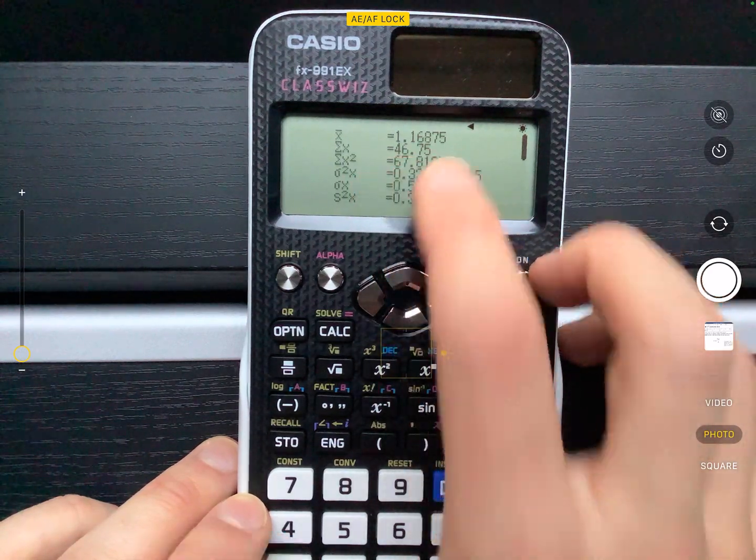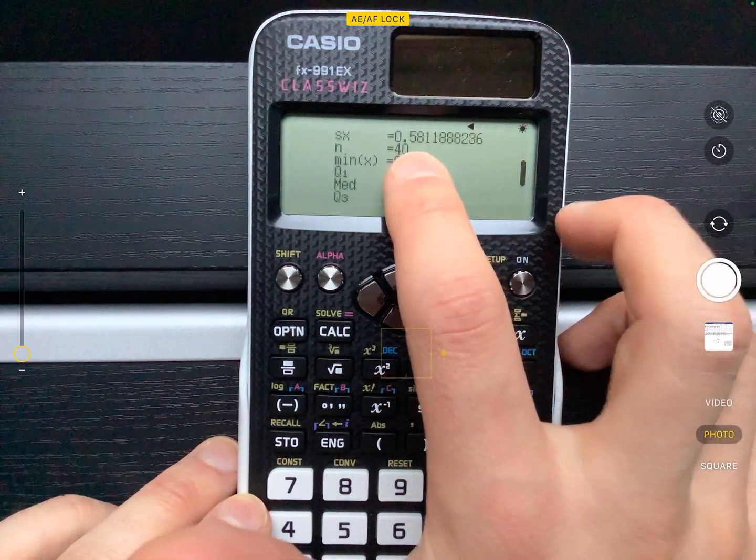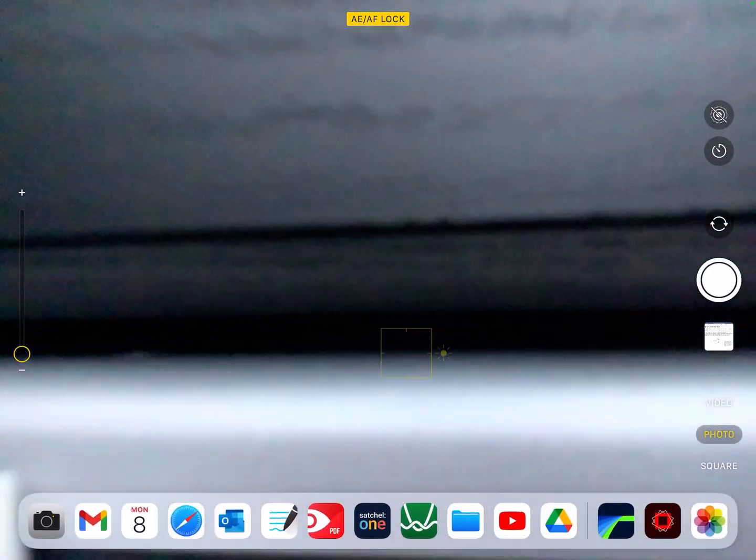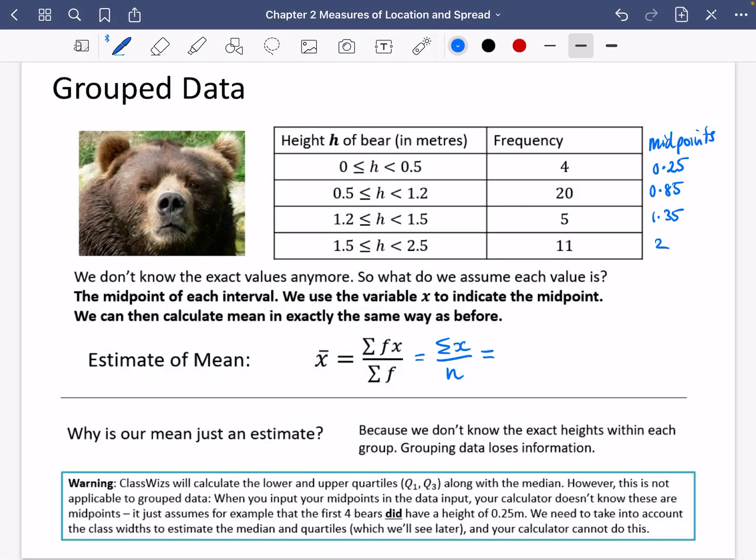I'm going to do the sum of X, which is 46.75 divided by 40. That's what I'm going to write just to make sure I get those method marks. So I'm just going to come back to GoodNotes. So from the calculator, the sum of X is 46.75.